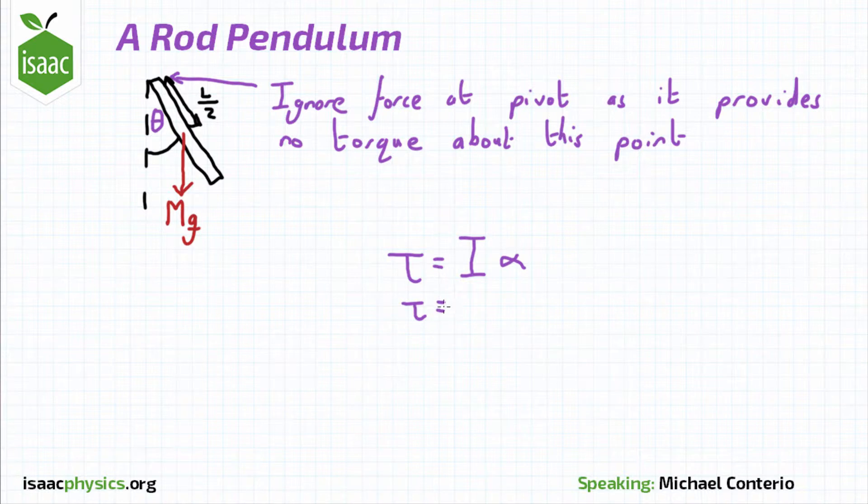Where tau is the torque about a point, I is the moment of inertia of the object about that point, and alpha is the angular acceleration about that point, which can also be written as theta double dot.